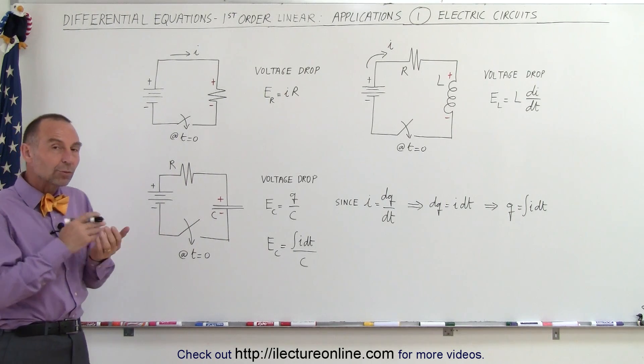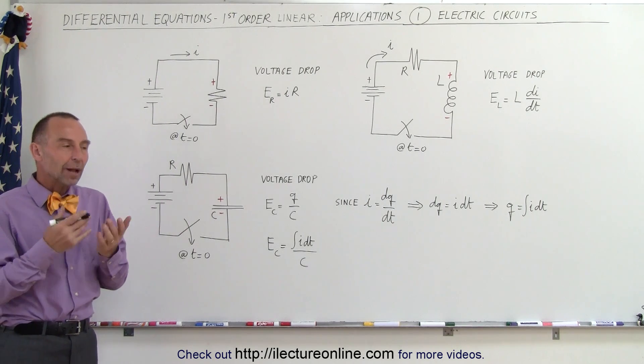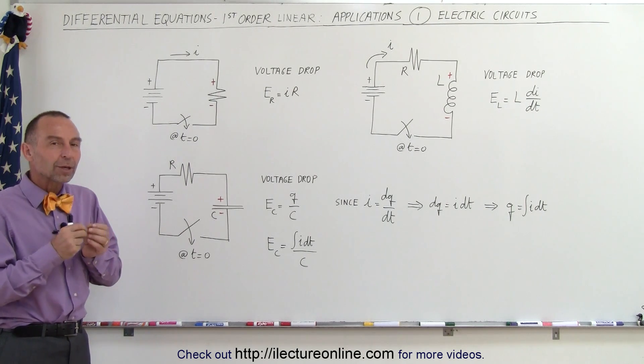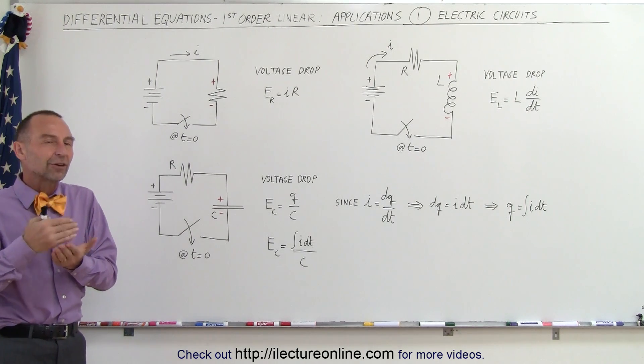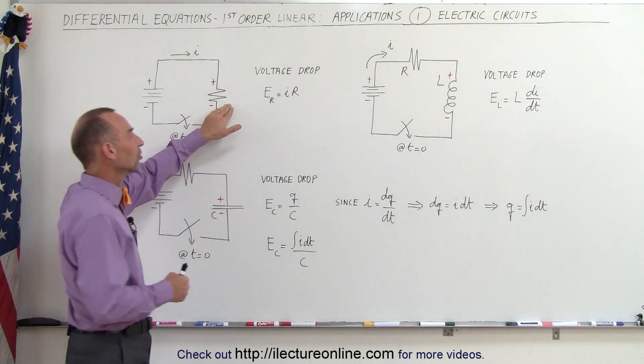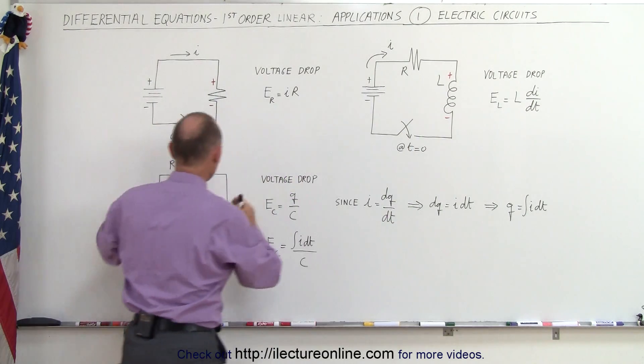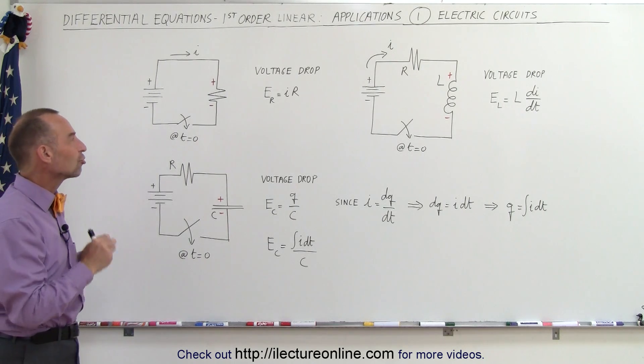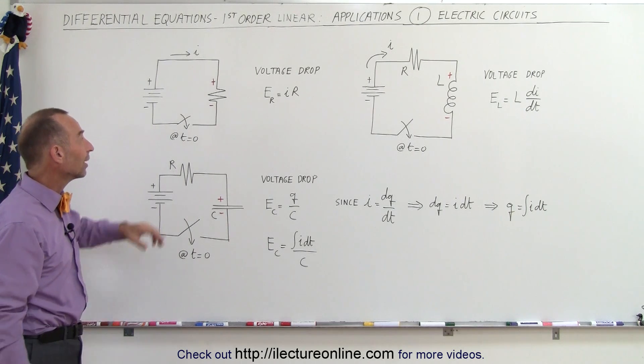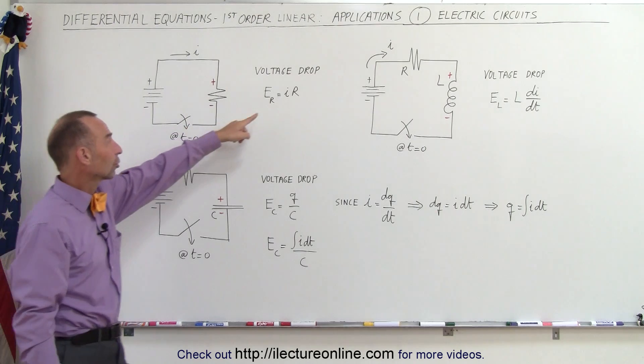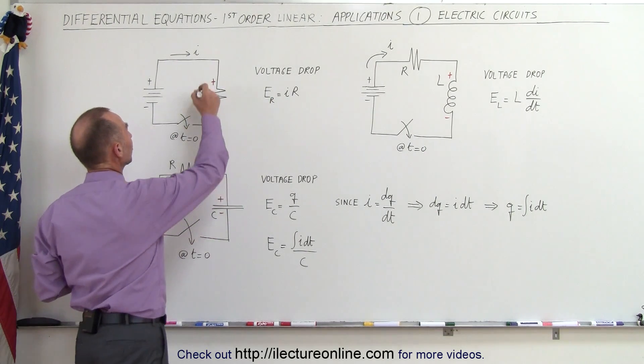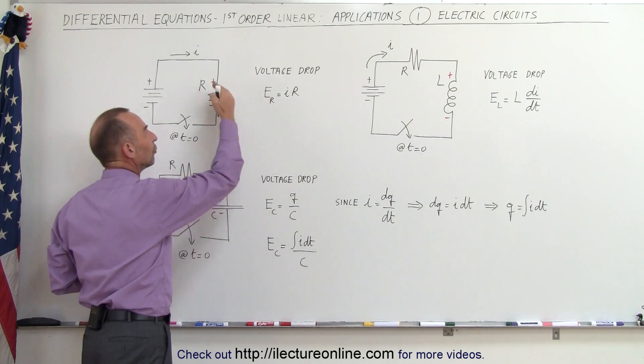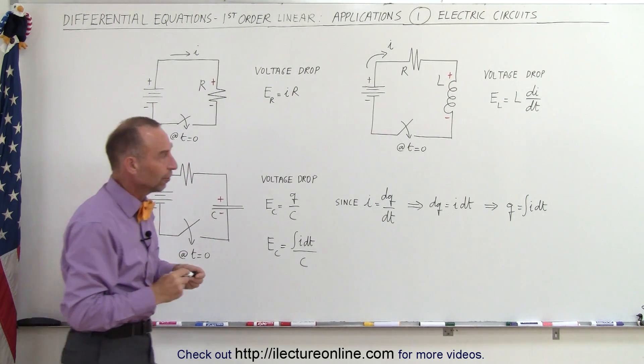One of the ways we solve these types of problems where we try to find the current inside circuits is to understand the voltage drop across various devices: resistors, inductors, and capacitors. How do you calculate the voltage drop across these devices? In the case of resistors, it's the current through the circuit times the resistance R. Multiply the current times the resistance, and that gives us the voltage drop across the resistor.